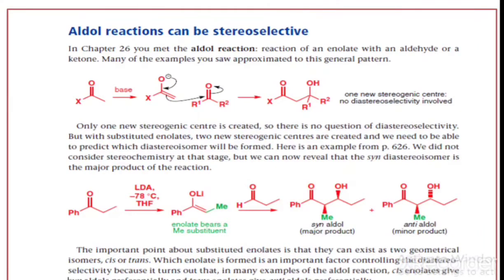We have to remember that diastereoselectivity becomes relevant when more than one stereogenic center is formed. The important point about substituted enolates is that they can exist as two geometrical isomers — cis or trans — and which enolate is formed is an important factor controlling diastereoselectivity. In many examples of the aldol reaction: cis enolate gives syn aldol preferentially, and trans enolate gives anti aldol preferentially.